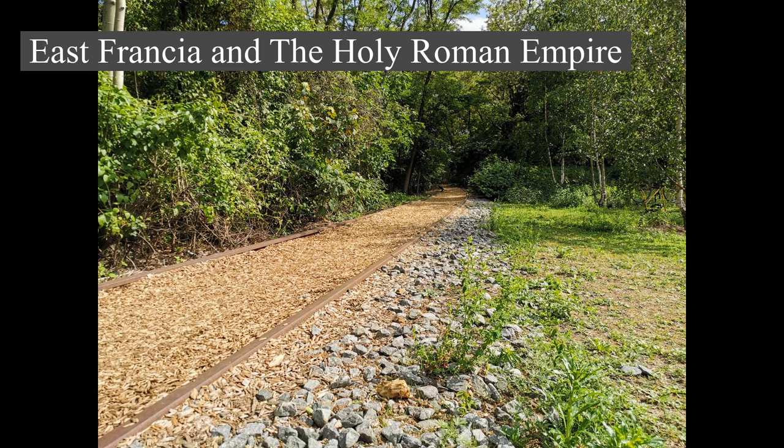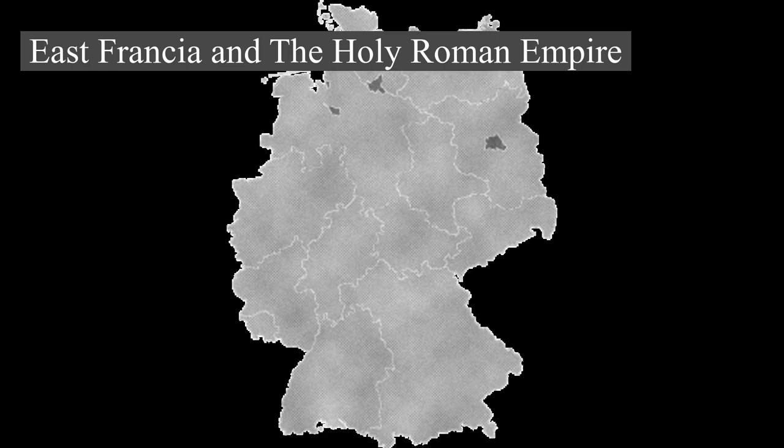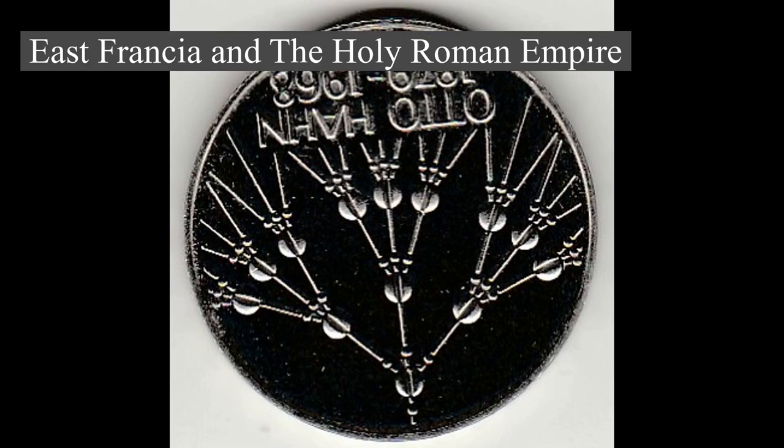Following the War of the Austrian Succession and the Treaty of Aix-la-Chapelle, Charles VI's daughter Maria Theresa ruled as empress consort when her husband, Francis I, became emperor. From 1740, dualism between the Austrian Habsburg monarchy and the Kingdom of Prussia dominated German history. In 1772, 1793, and 1795, Prussia and Austria, along with the Russian Empire, agreed to the partitions of Poland.